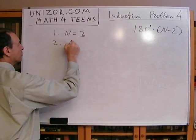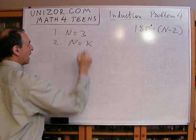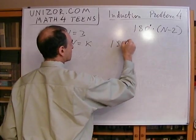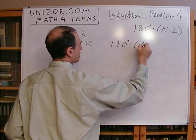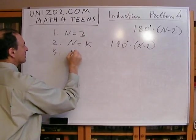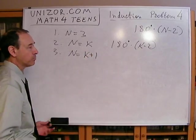Number two, let's assume that if n equals k, if we have a k-sided polygon, the formula is 180 degrees times k minus 2. And let's think about what happens when we have a k plus 1-sided polygon.